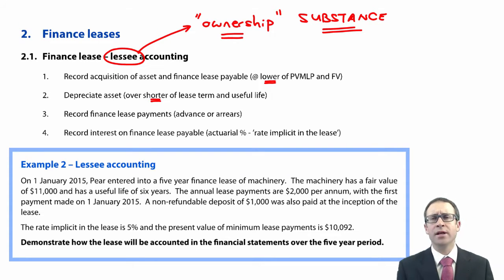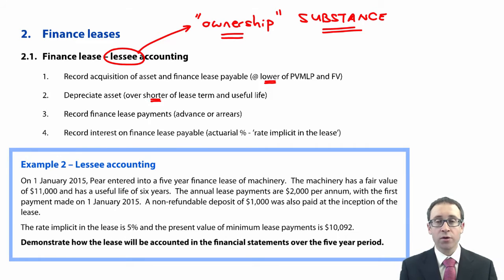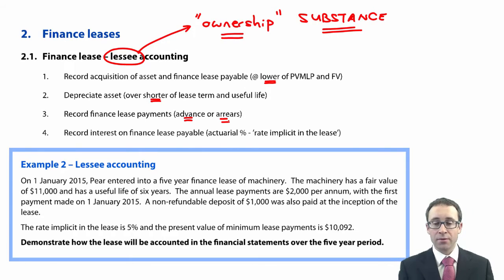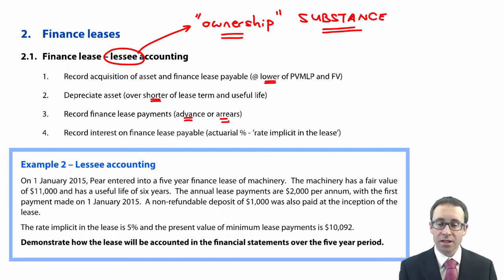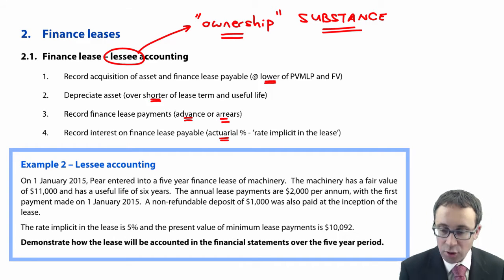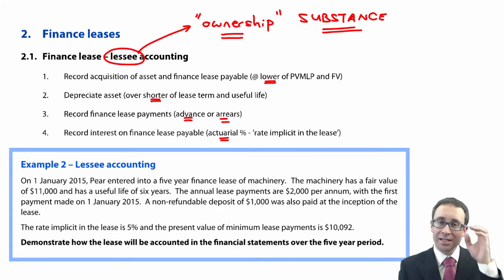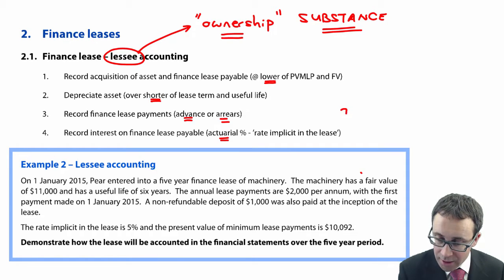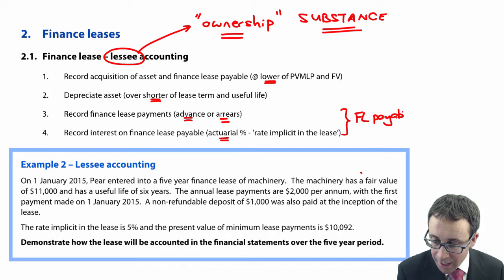Steps three and four are closely related because they're to do with the payable, and you can do them either way around depending on how things are set up in the question. First, you record the lease payment — credit the bank and debit the payable — being careful whether payments are in advance at the start of the lease period or in arrears at the end. Then you record the interest on the payable using the actuarial percentage, which is essentially the rate implicit in the lease. You debit the finance cost and credit the payable. For this you need your finance lease payable table.